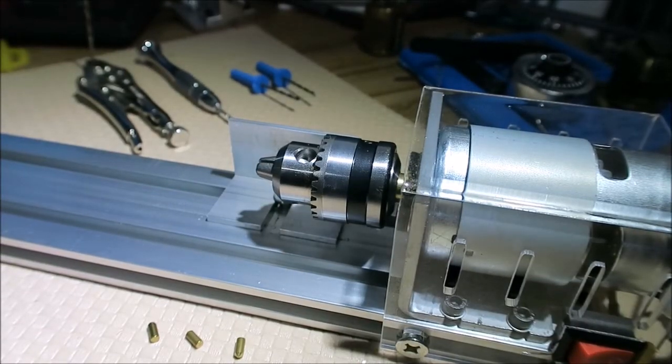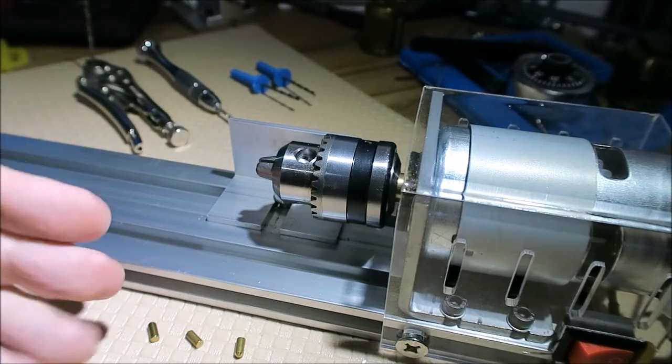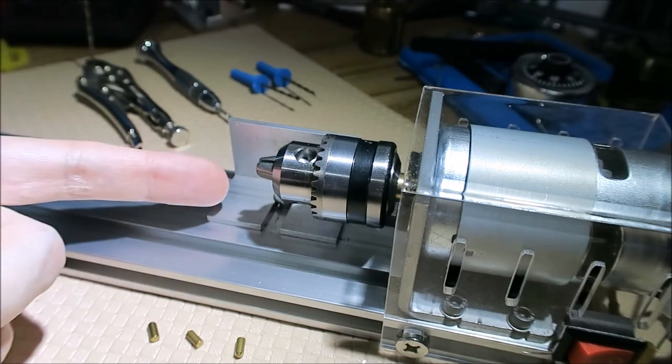Hello, today we are continuing our series about drilling centered holes in pins. Today we're going to explore a method where we put the pin inside a rotating motor like a lathe or a drill or a Dremel, and then use a drill bit to make a hole in the pin.